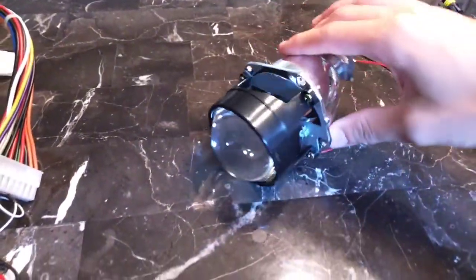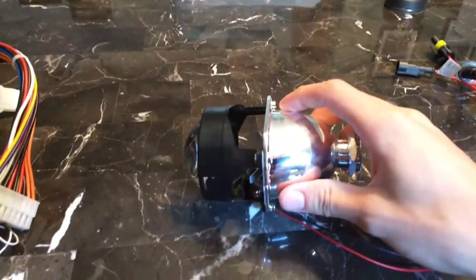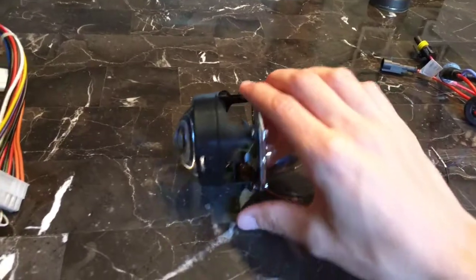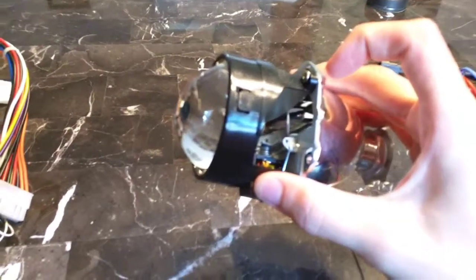If you haven't seen a projector before, this is what basically all of them look like. You have a big lens on the front and a reflector housing on the back. This is a bi-xenon projector, so it's capable of both a high and a low beam.